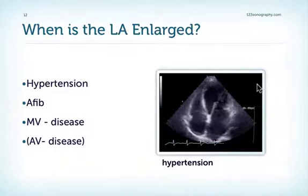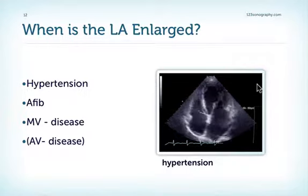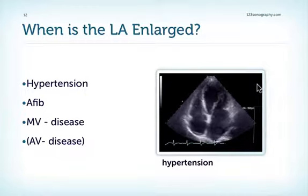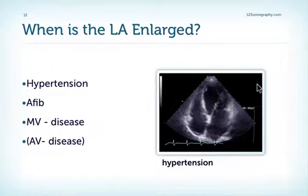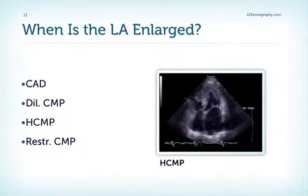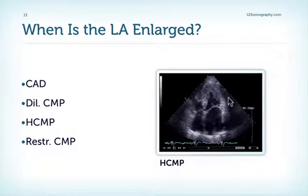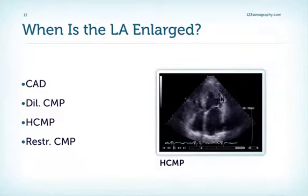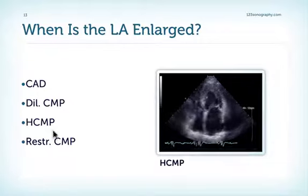Atrial fibrillation itself causes an enlargement of the left atrium — it is not only a consequence of left atrial enlargement. We can find left atrial enlargement in mitral valve disease such as mitral stenosis or mitral regurgitation, and also, to a lesser degree, in aortic valve disease. Further causes include coronary artery disease, dilated cardiomyopathy, and hypertrophic cardiomyopathy — here we see massive left ventricular thickening, hypertrophy, and a filling problem which causes dilatation of the left atrium — as well as all other forms of restrictive cardiomyopathy.